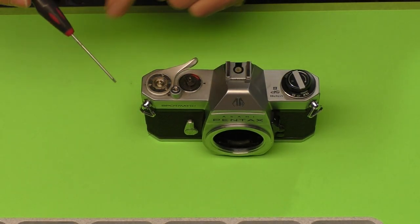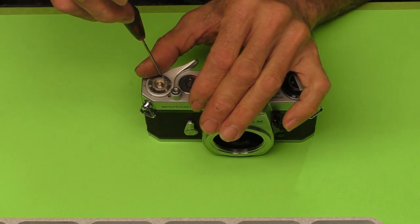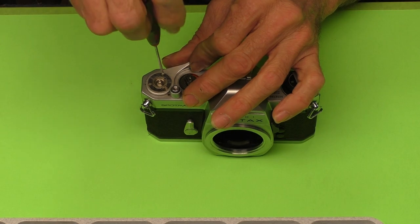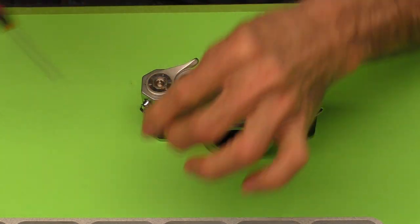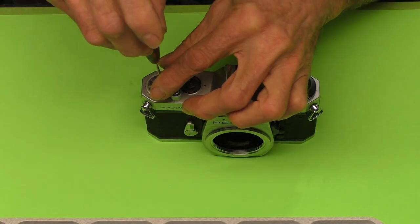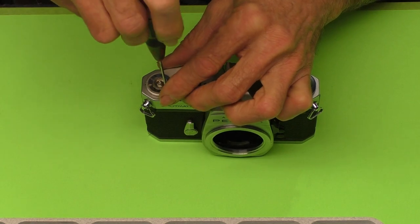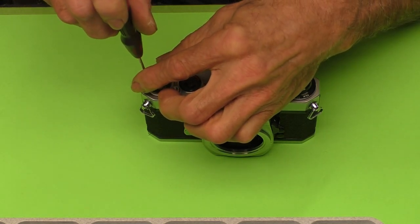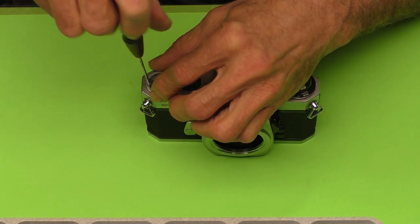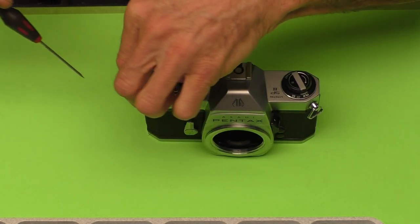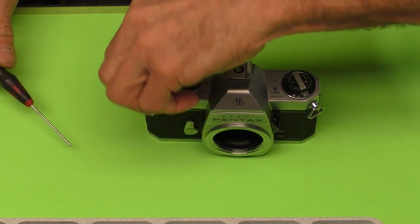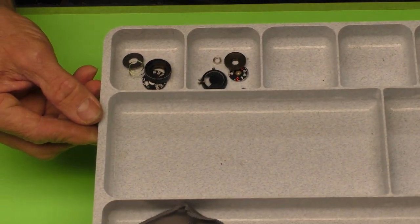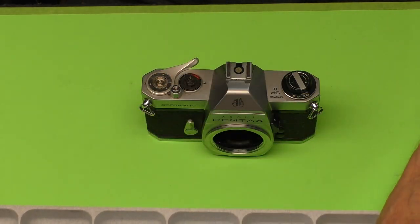Now we've got three screws that need to come out. Since they aren't in the center of something, they're probably right-hand thread. Yes, they are. It's a good idea when you take these things apart to just kind of keep them in groups. Makes it a little easier when it all goes back together. So there's people that work on these a lot that just throw everything in a pile. I like to do it like this. Just have some kind of a tray with different compartments.